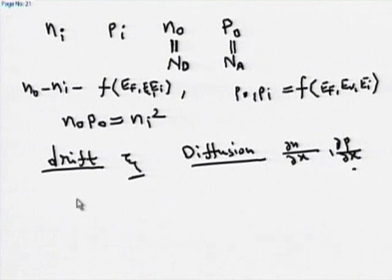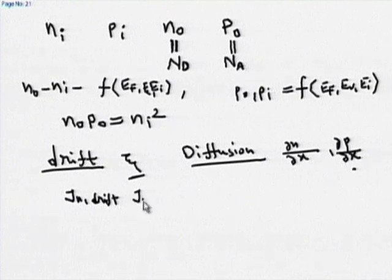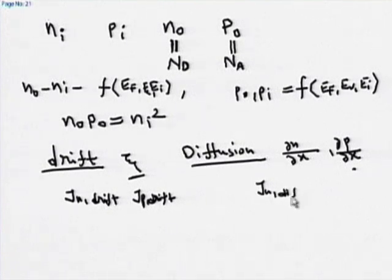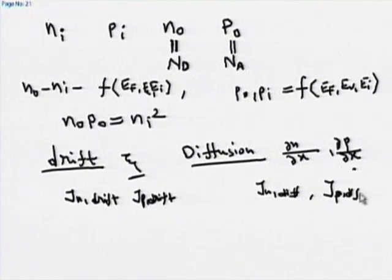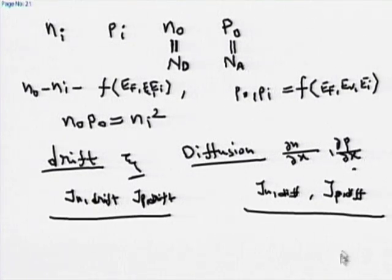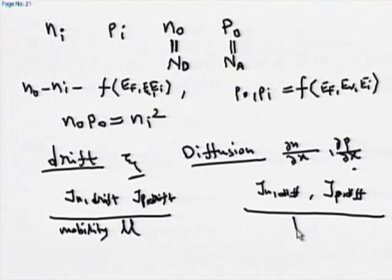We found the drift current for electrons J_n drift and J_p drift for holes. Similarly, we found J_n diffusion for electrons and J_p diffusion for holes. The total current is the sum of all four components. We also introduced the important material parameters: mobility, coming from drift, and diffusion coefficient, coming from diffusion.